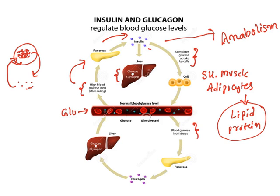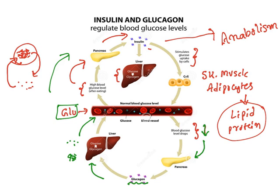Whenever blood glucose level drops and glucose level is coming down, it gives a signal to the pancreas. Pancreas now releases glucagon, another hormone. The job of this glucagon is it acts on liver and converts glycogen to glucose. The polymer glycogen is converted into glucose and it gets into the blood. This is how the blood glucose level is maintained. When glucose is high, insulin releases and glucose gets into the cells and tissues. When glucose is low, glucagon releases and it stimulates the breakdown of glycogen to glucose and releases glucose into the blood. All the time these levels are maintained at 90 to 120 milligrams per deciliter.